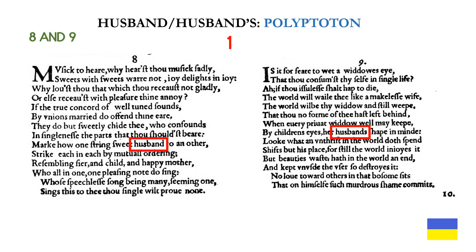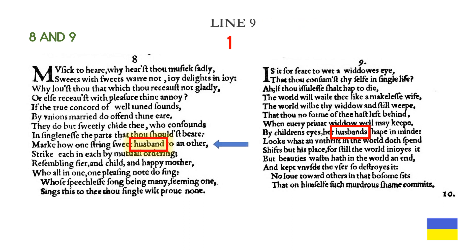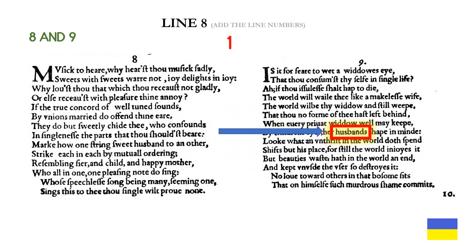Now we get sonnets eight and nine — an example of polyptoton in the words husband and husbands. Husbands with an apostrophe s is the possessive. Husband appears on line nine in sonnet eight. Husbands with an apostrophe s appears on line eight in sonnet nine. For another numerical authorship clue, add the line numbers.